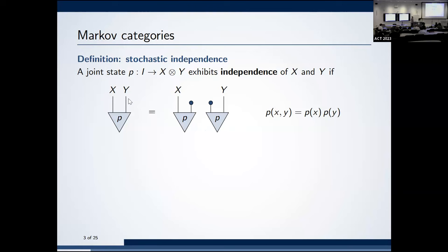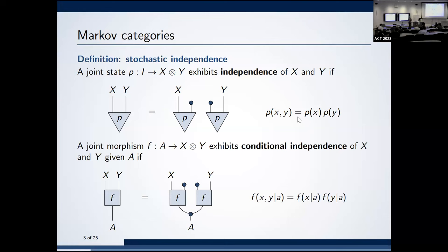You can condition on x and learn something about y — in case you have conditionals, that turns into an actual morphism, so you can do some inference. Similarly, a joint morphism with an input exhibits conditional independence if you can split it, but you have to share the input. In Stoch, that amounts to saying the conditional probability is the product of conditional probabilities given the input.